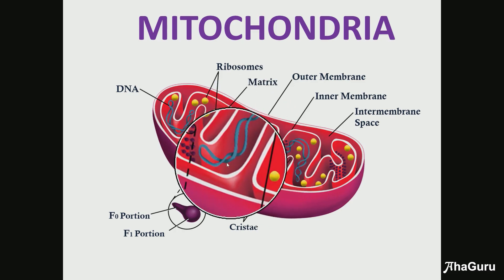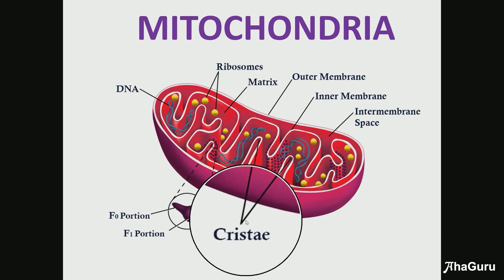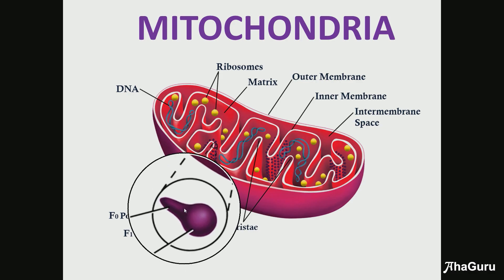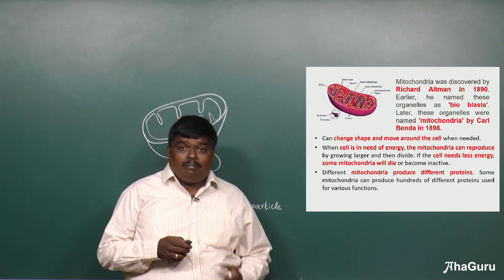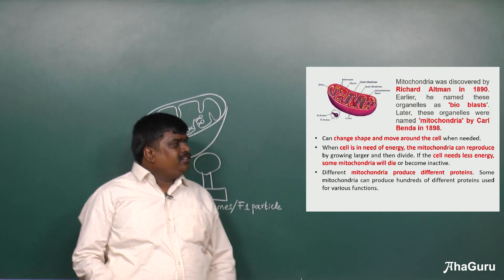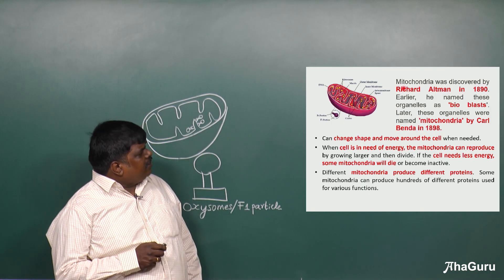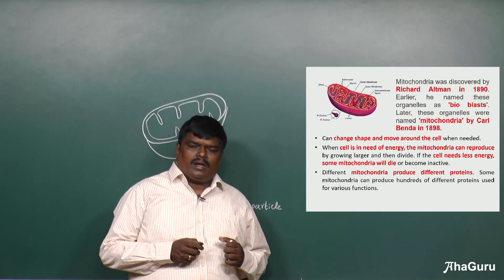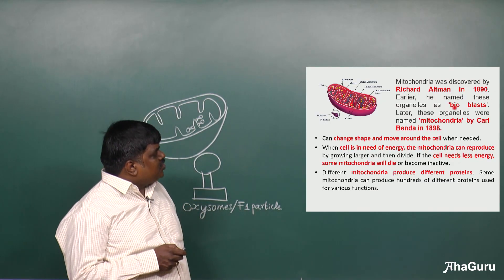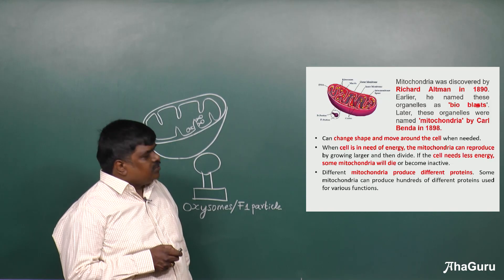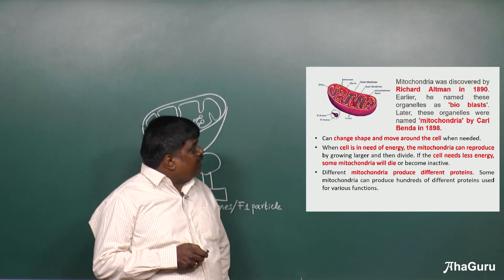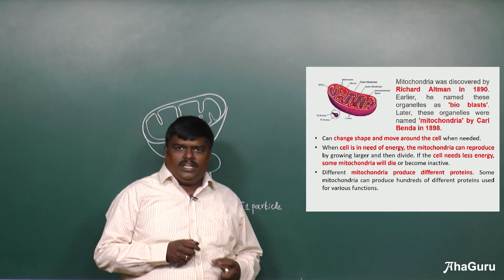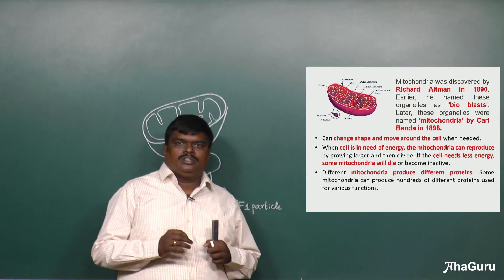So this is the typical structure of mitochondria: outer membrane, inner membrane, matrix, its own DNA, ribosomes, inner folds (cristae), and oxysomes or F1 particles. Mitochondria was first discovered by Richard Altmann in 1890, who called them bioblasts. Later, in 1898, Karl Benda coined the term 'mitochondria.'